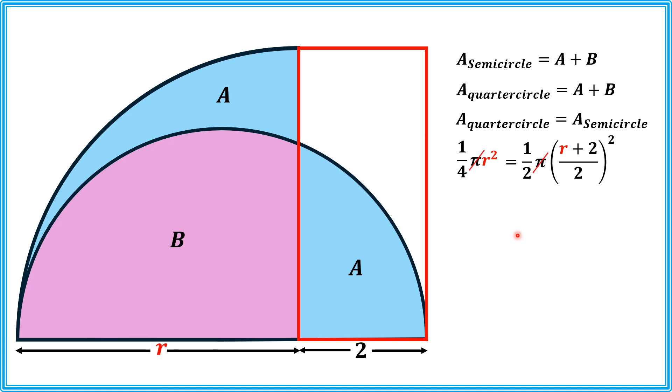Here, pi will be cancelled out on both sides and we will have R squared over 4 is equal to (R + 2) squared divided by 8.